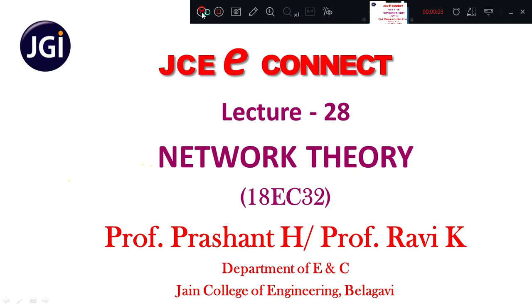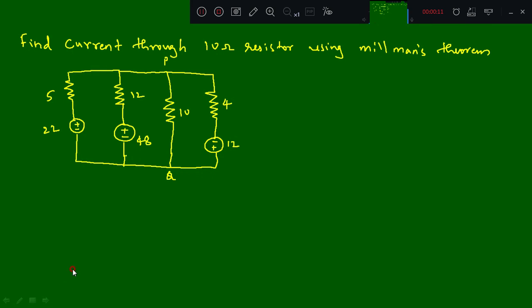Good morning students. Today we are going to solve two problems on Millman's theorem. The first problem is: find the current through the 10 ohm resistor using Millman's theorem. The circuit is given.